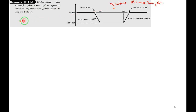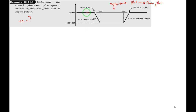Step by step: First, identify corner frequencies. Corner frequencies are those at which the change of slope takes place. The first corner frequency ωc1 is where the slope changes from 0 dB/decade to −20 dB/decade — that is at ω = 1 rad/s, so ωc1 = 1. The second corner frequency ωc2 is where slope changes from −20 dB/decade back to 0 dB/decade, at ω = ω₂.